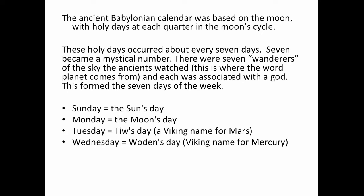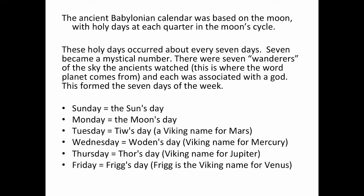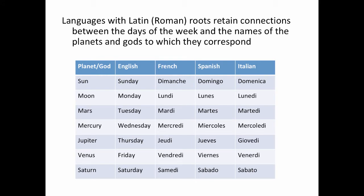Wednesday in English comes from Woden's day, and Woden was a Viking name for Mercury. Thursday comes from Thor's day, which was a Viking name for Jupiter. Friday from Frigg's day, which is a Viking name for Venus. Saturday comes from Saturn's day. Languages with Latin or Roman roots still retain the connections between the days of the week and the names of the planets and gods to which they correspond. You can see how lundi, lunes, and lunedì in French, Spanish, and Italian correspond to the word lunar. Similarly, Mars, Mercury, and the other planets are visible in those languages' day names.